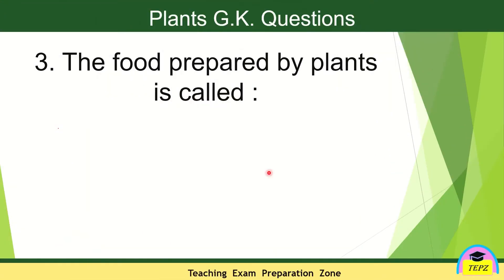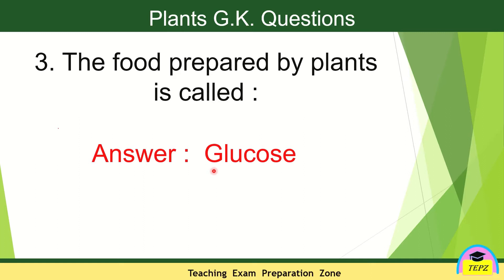Next one: the food prepared by plants is called what? Food is prepared in the photosynthesis process. The food is called glucose. The food prepared by plants is called glucose. The excess food which is stored in the plants is called starch.